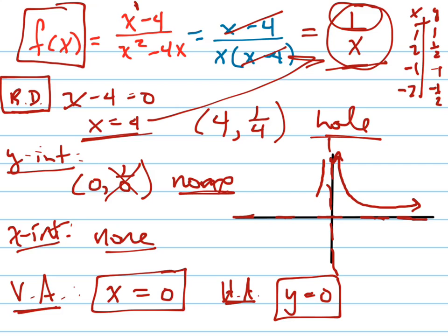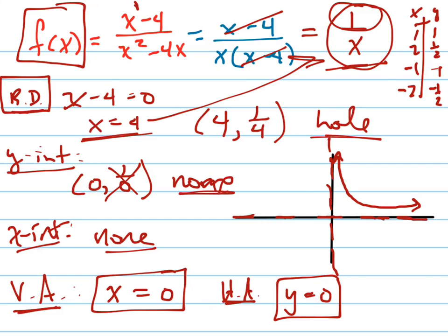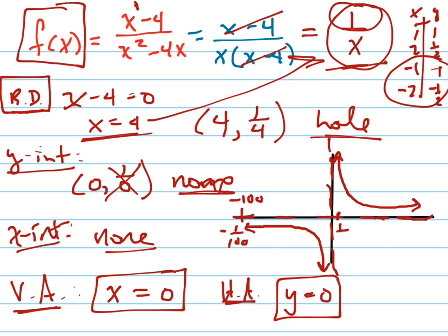To the left of the y-axis, the graph is negative — it goes underneath. Because when I plug in negative 100, I get negative 1 over 100, which is really close to 0. And if I plug in x equals 1/10, then 1 over (1/10) is 10, which is way up here — positive and large. So you can see that you've graphed this correctly.